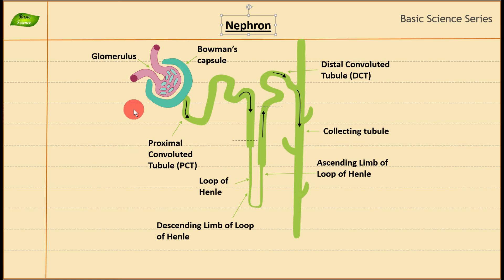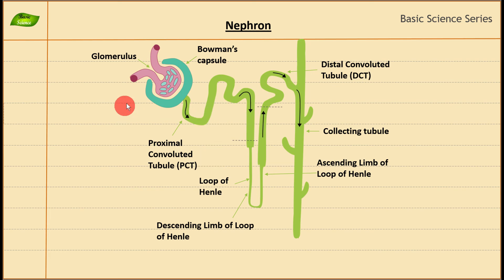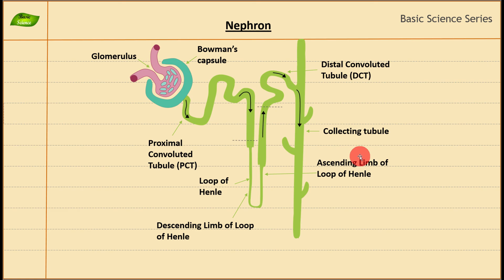We have discussed most parts of the nephron — glomerulus, Bowman's capsule, PCT, loop of Henley with its ascending and descending limbs, DCT, and collecting tubule. This is an introductory video to help you prepare for the whole topic. I encourage you to read more about the DCT and PCT, as they are really important for understanding kidney function. I hope this video was helpful. I'll bring more videos in the future — let me know in the comments if you want a video on a specific topic, and please hit the like button. Thank you and take care.